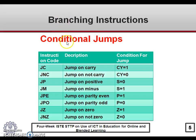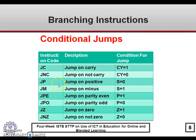Now, conditional jumps. Different flags are checked for various conditions. For example, the instruction JC checks whether the carry flag is set or 1. JNC means jump if not carry — it checks whether the carry flag is 0. If the carry flag is 0, only then will it alter the program sequence, otherwise not. JP means jump on positive; JM means jump on minus — these check the sign flag, and if the condition is satisfied, the program sequence is changed.